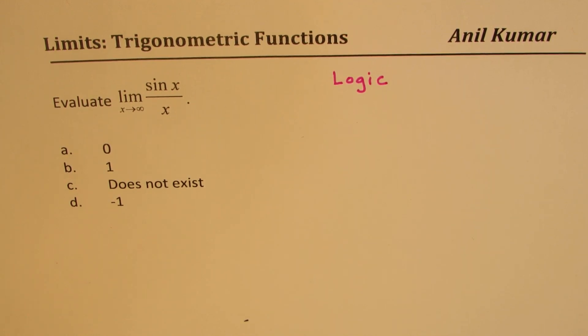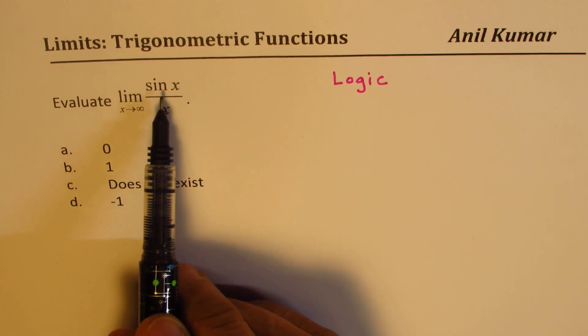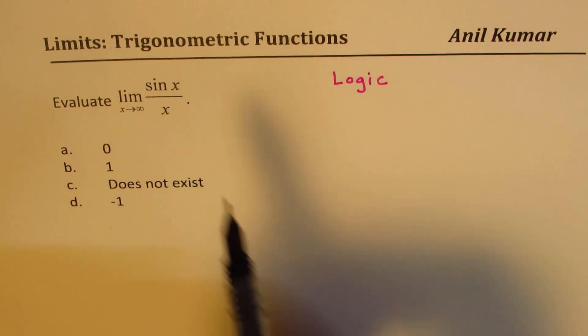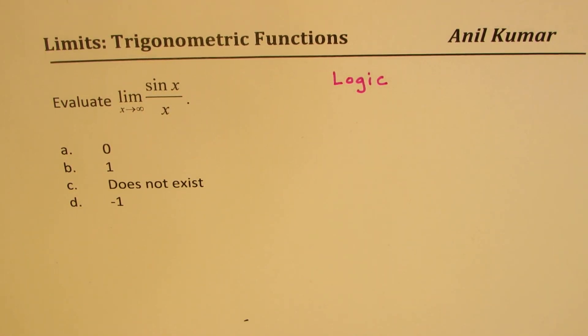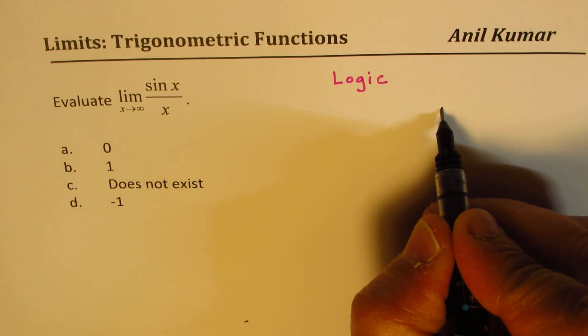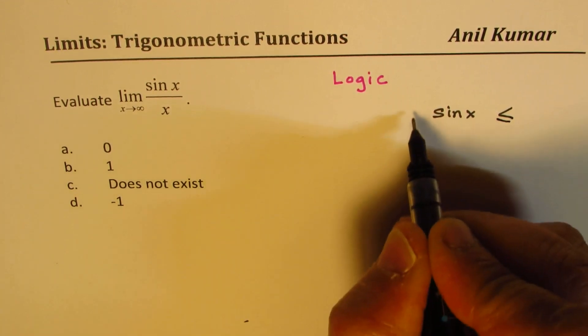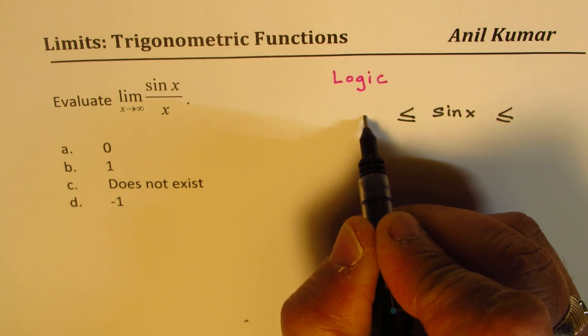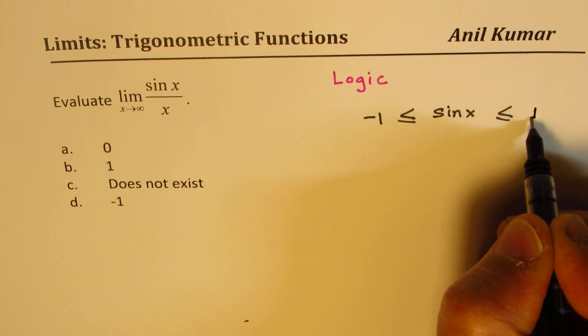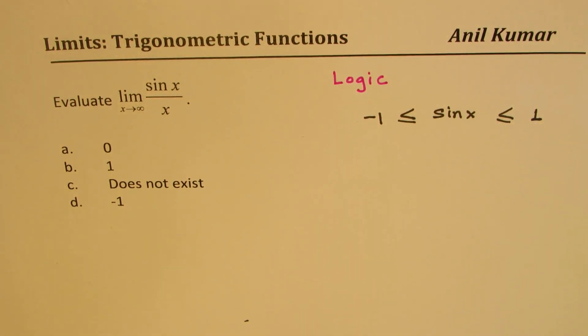As you know, the sine function is basically restricted in range; it could be well within only plus and minus one. So we know that sin(x) can be a value which is between -1 and +1.